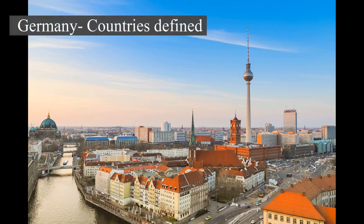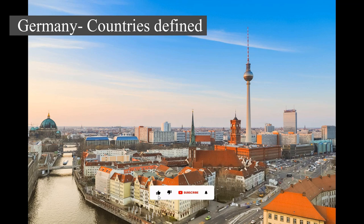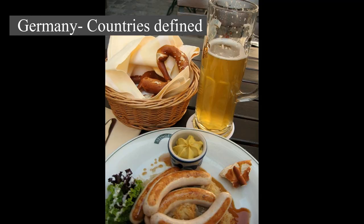Germany, German: Deutschland, officially the Federal Republic of Germany, is a country in Central Europe. It is the second most populous country in Europe after Russia and the most populous member state of the European Union.